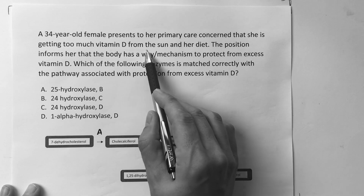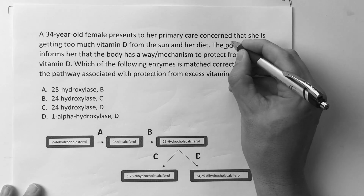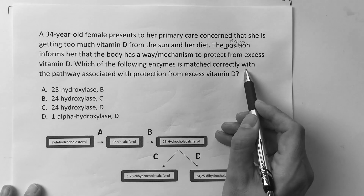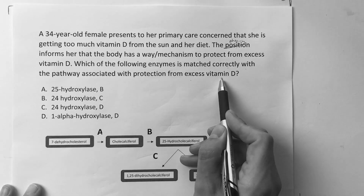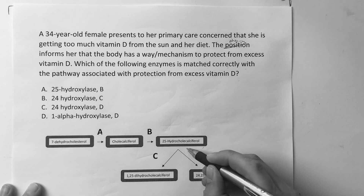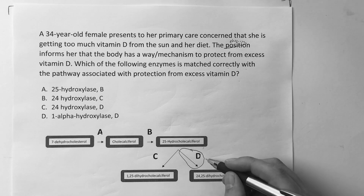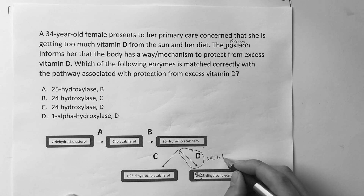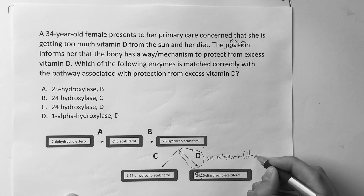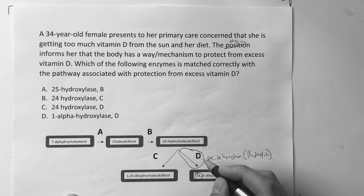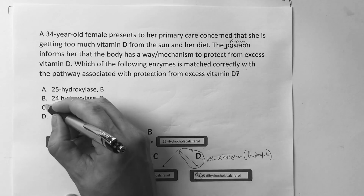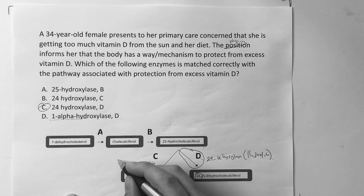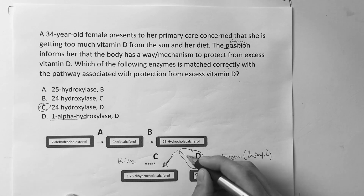The third question: a 34-year-old female is concerned she's getting too much vitamin D from the sun and her diet. The physician informs her that the body has a way to protect from excess vitamin D. Which enzyme is matched correctly with the protective pathway? You already know — excess vitamin D is handled by the inactive pathway. The enzyme is 24-alpha hydroxylase. It's a hydroxylation reaction and it's the protective pathway. The active form uses one-alpha hydroxylase in the kidney. The 25-hydroxylase step is in the liver. And the isomerization step is in the skin.